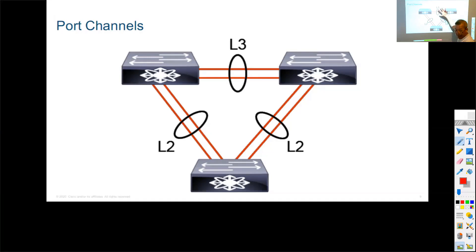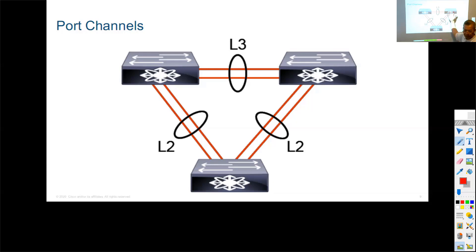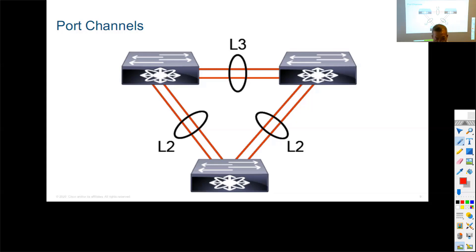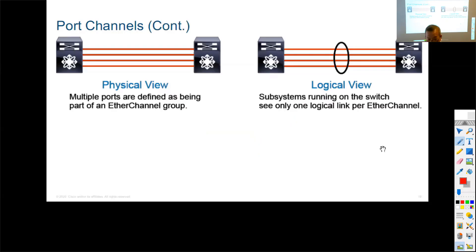For Layer 3 port channel, all IP and policy configuration goes on the logical port channel, not the physical interfaces. For Layer 2 port channel, all policy must also be implemented within the port channel logical interface. On the physical member interfaces, you only set duplex and ensure they match. Everything else — whether Layer 2 or Layer 3 — is configured on the logical port channel interface.